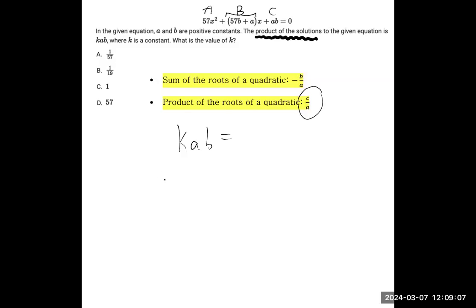So once again, we're seeing the sort of duplicated uses of a, b, and c, but we won't let it get us down. The b is this thing, 57b plus a. And the c is a·b. The a is 57.